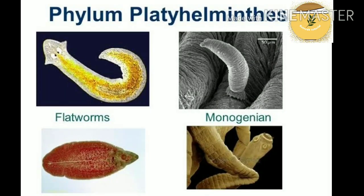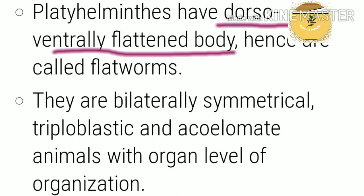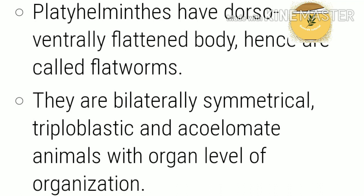Welcome to this tutorial. Today I will discuss Phylum Platyhelminthes. They have a dorsoventrally flattened body, hence are called flatworms. The body is flat from both surfaces — lower and upper surfaces. These are mostly endoparasites found in animals including human beings. Endoparasite means a parasite, such as tapeworms, that lives within another organism.